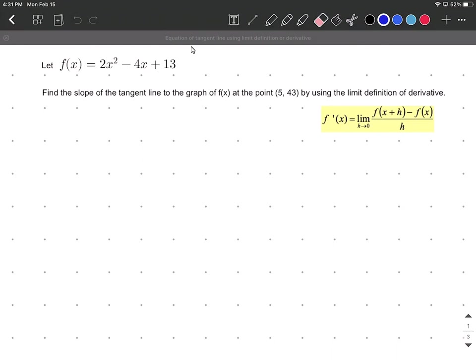First, you'll notice the limit definition of derivative on the right side: f'(x) = lim(h→0) [f(x+h) - f(x)]/h. In our case, because we're given this specific point (5, 43), the value of x is 5. So in our general form, we can simply plug in 5 from the beginning.